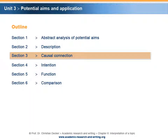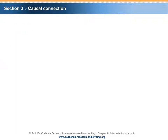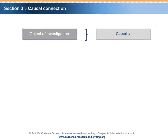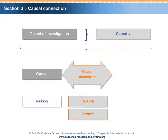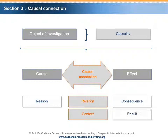Section 3 – Causal Connection. An object of investigation can also be analyzed with respect to its causality. The causal connection addresses a relation or a context. A cause — or in other words a reason — leads to an effect — or in other words a consequence or result. In some cases there is a cause-and-effect chain where the effect becomes the cause for the next effect, and so forth.